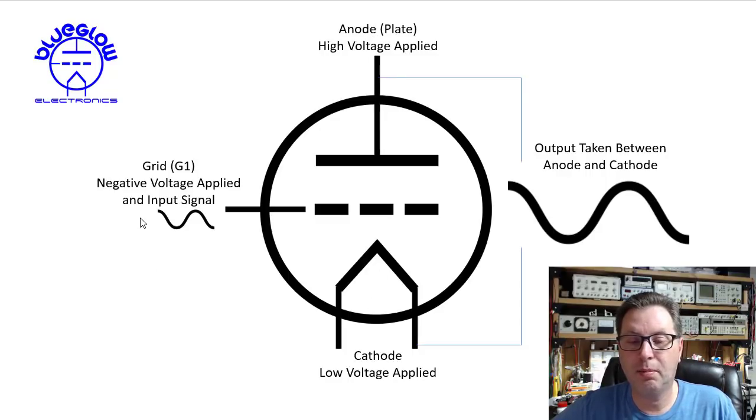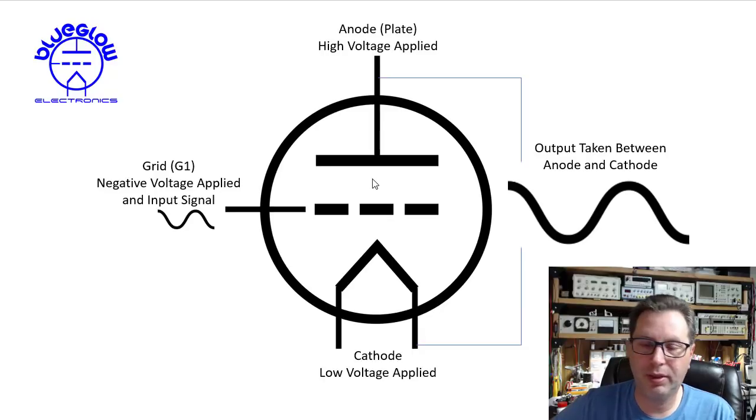And then we kind of modulate that negative voltage with a signal which varies the amount that we turn on or off the flow. So you could almost think of this as a water hose letting electrons flow through the tube, and then you could think of this as the spigot, kind of turning on or off how much water or electrons can flow through the tube.